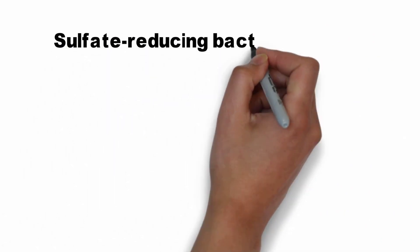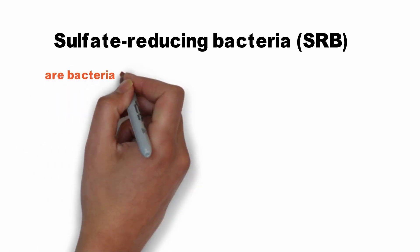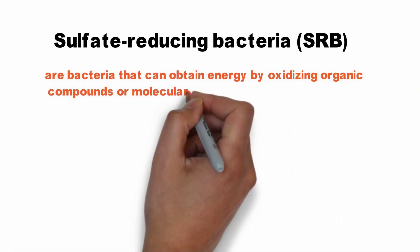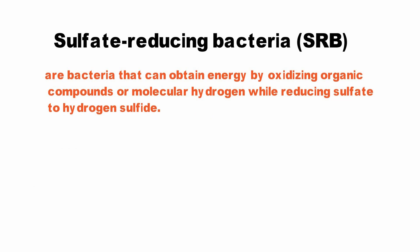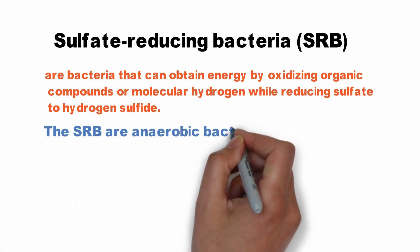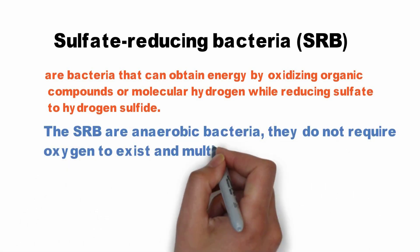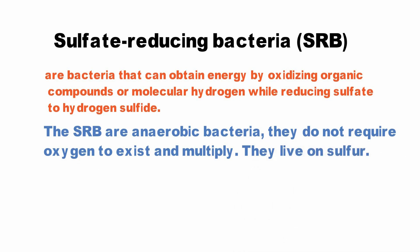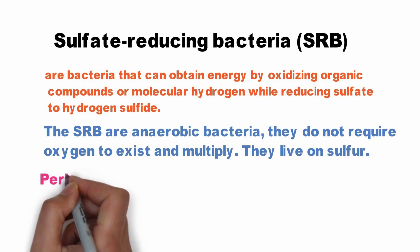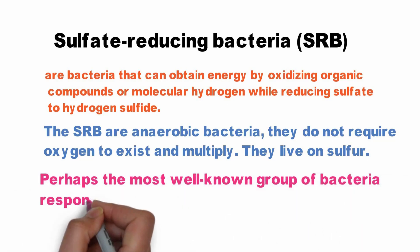Sulfate reducing bacteria are bacteria that can obtain energy by oxidizing organic compounds or molecular hydrogen while reducing sulfate to hydrogen sulfide. The SRB are anaerobic bacteria — they do not require oxygen to exist and multiply. They live on sulfur. Perhaps the most well-known group of bacteria responsible for corrosion in the oil and gas industry are the SRB bacteria.